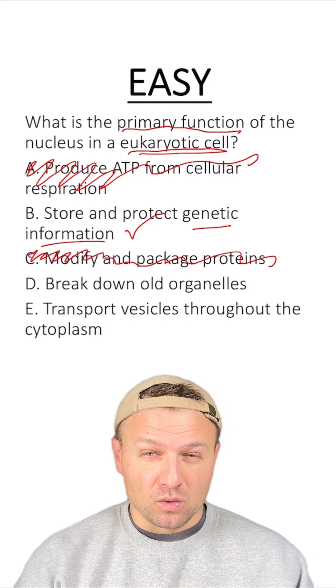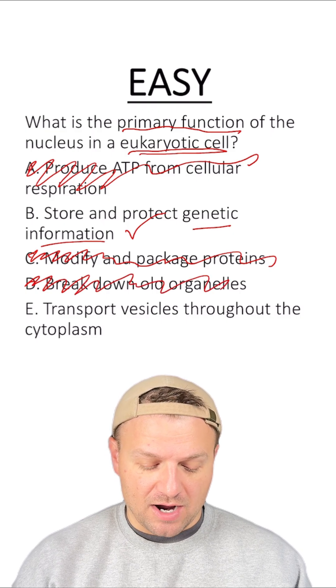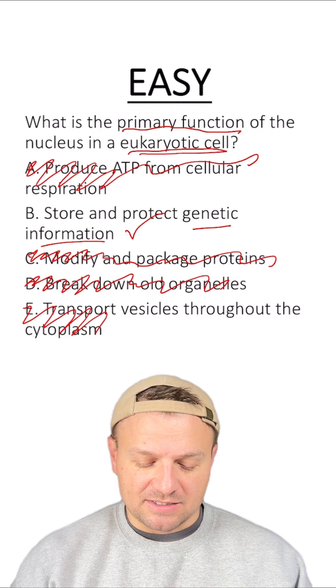Option D: break down old organelles. No, that would be the lysosome. And then E: transport vesicles throughout the cytoplasm. That would be like the cytoskeleton.